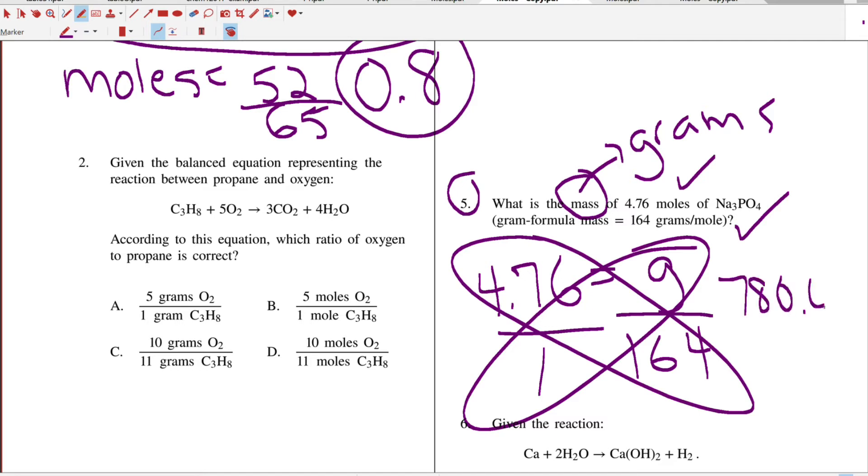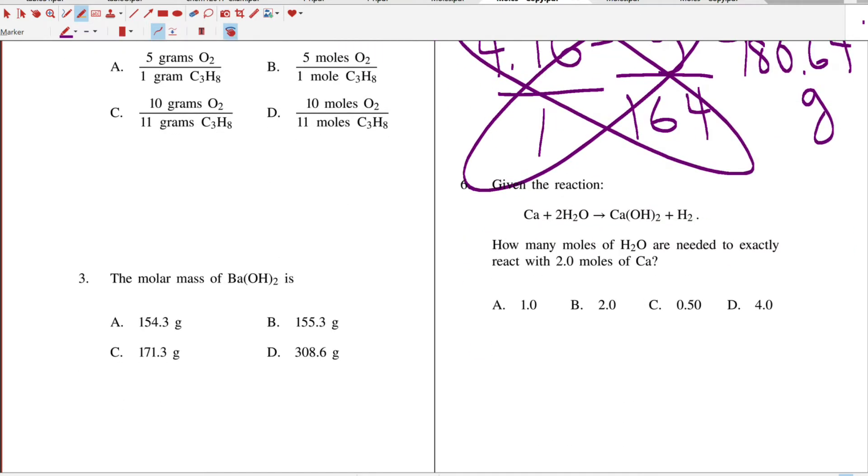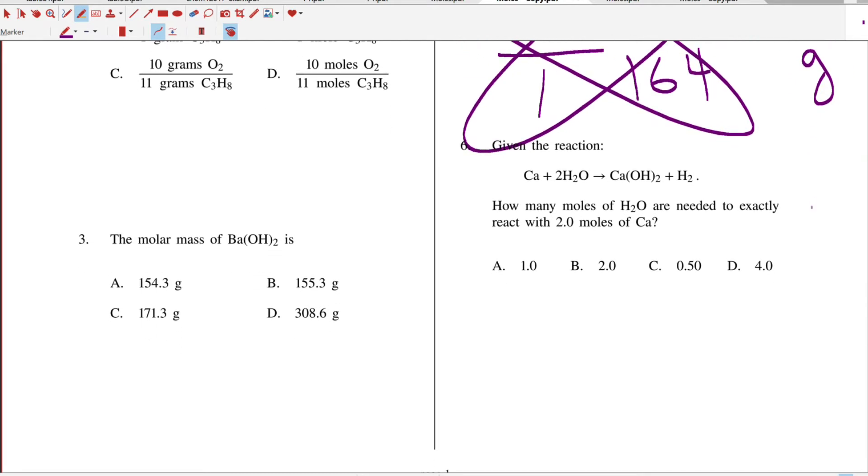Now if they give you a reaction like in this one, and it will say given a reaction, so you see those words 'given a reaction.' How many moles of water are needed to react with two moles of calcium? So I'm going to put two above the calcium and x above the water, and you have to know that the coefficient in front represents the moles. So the coefficient, which is the number in front, is the moles.